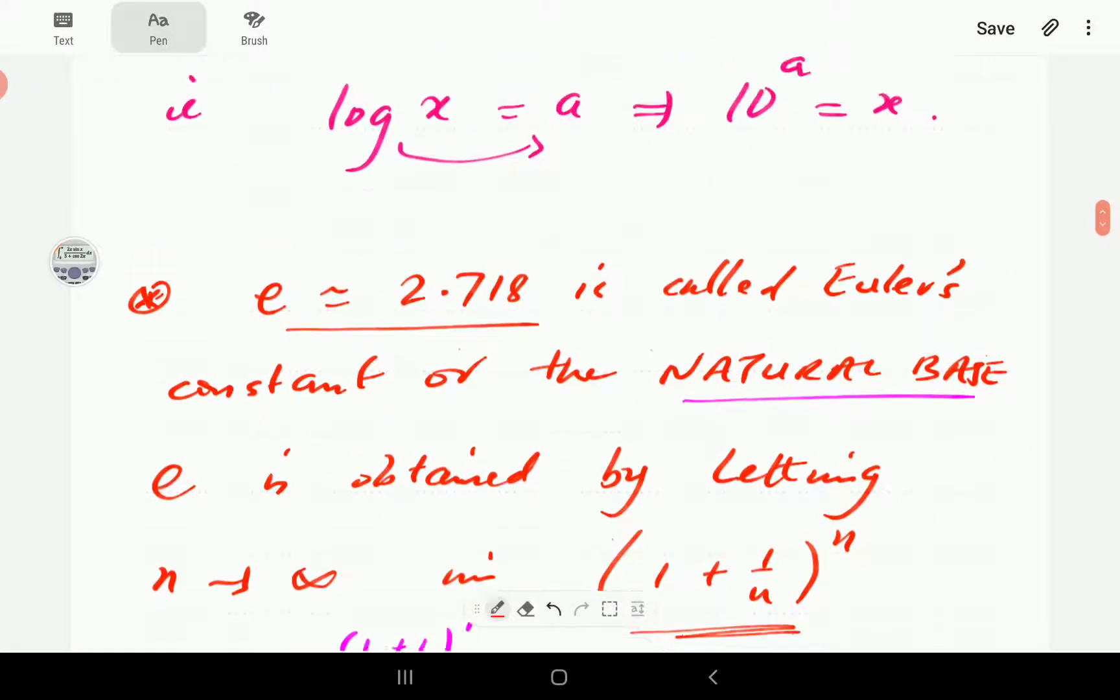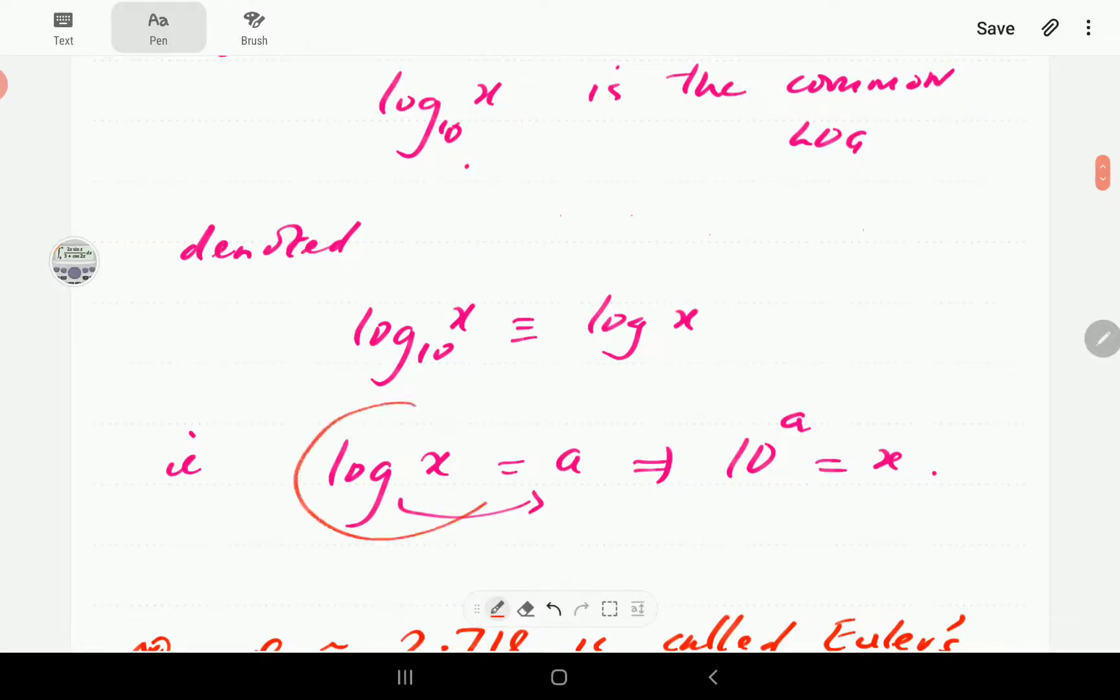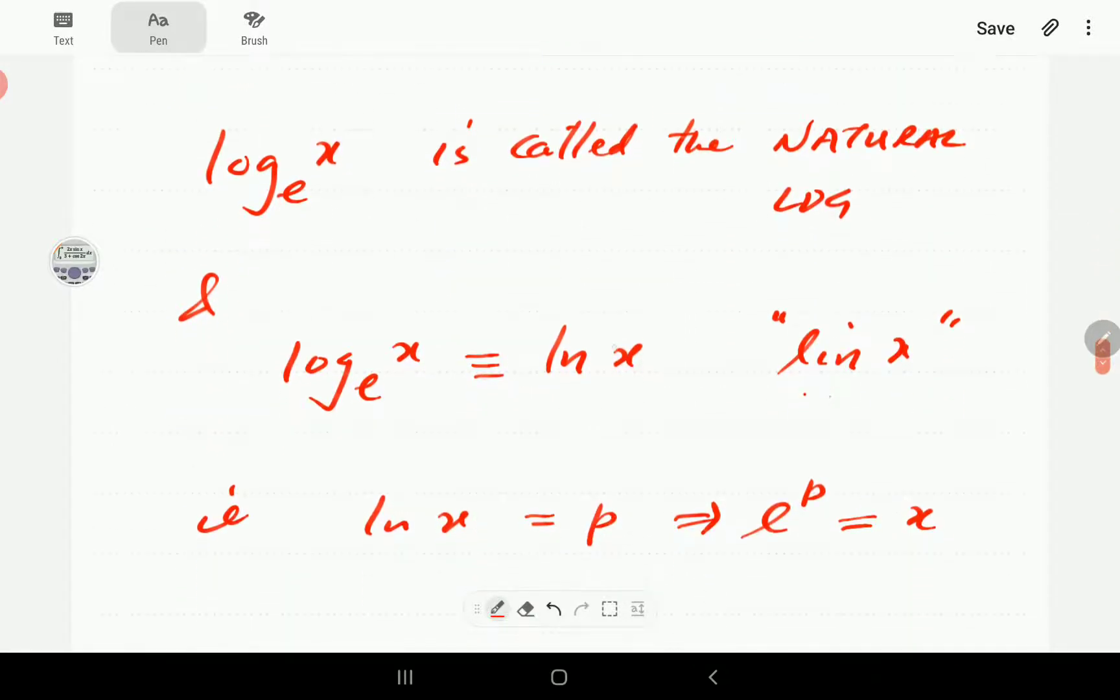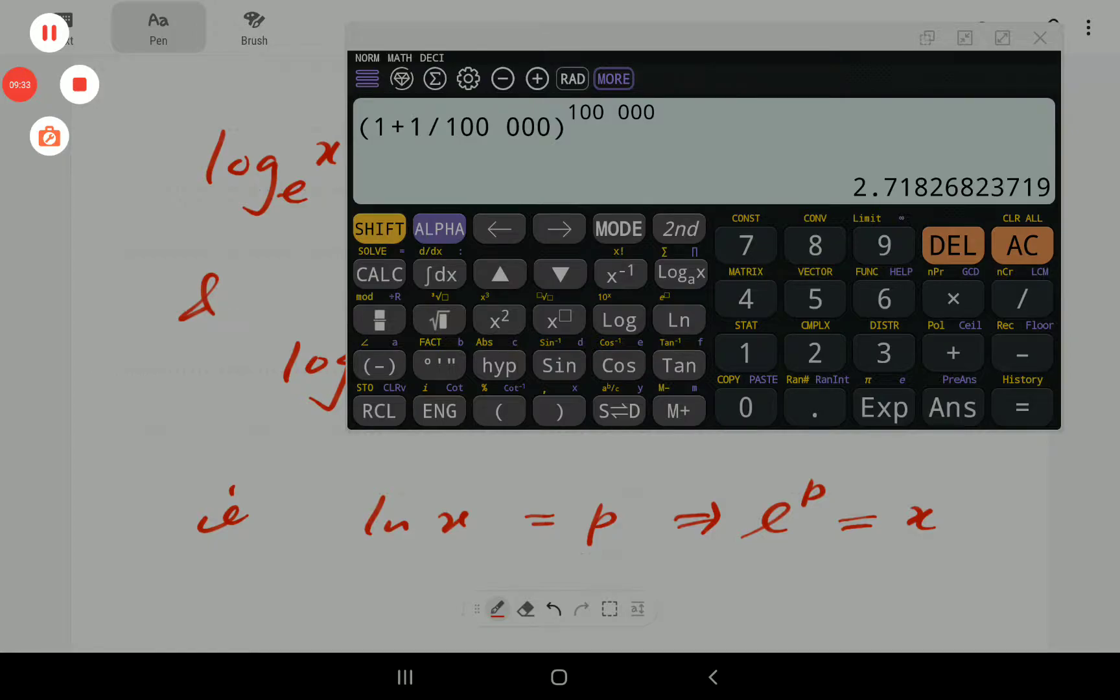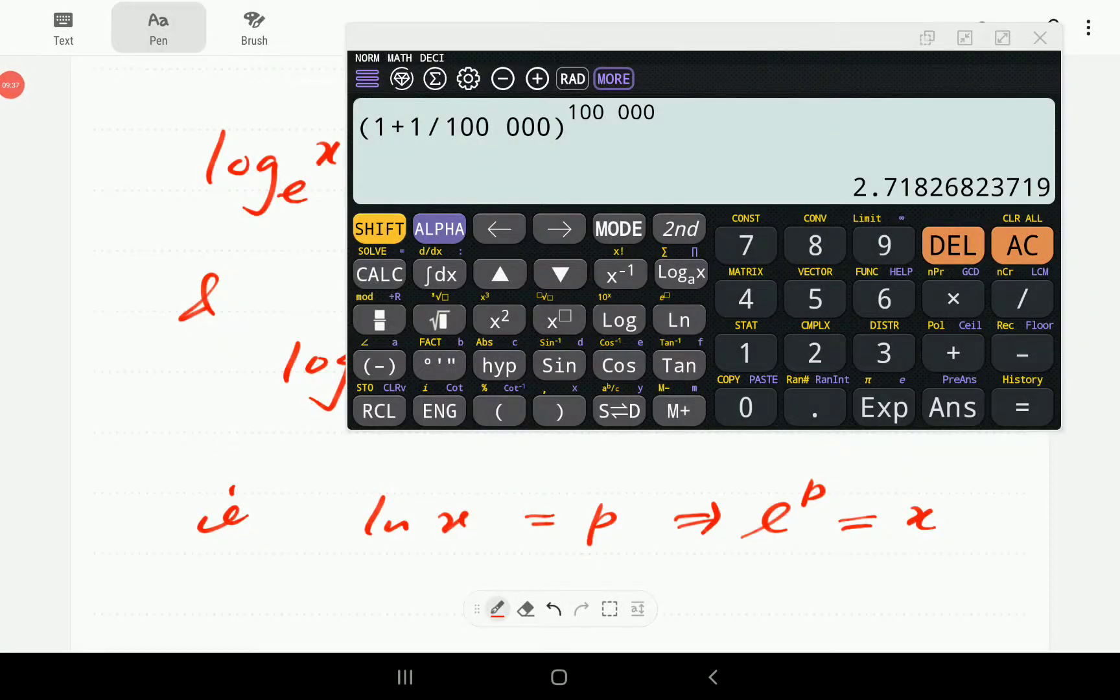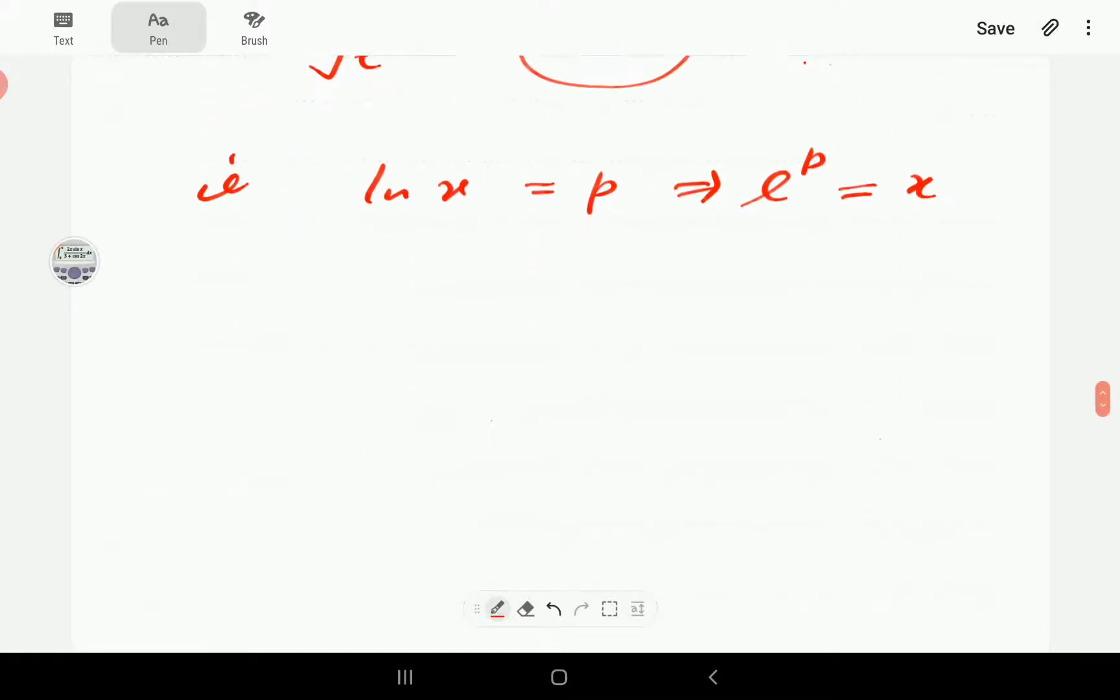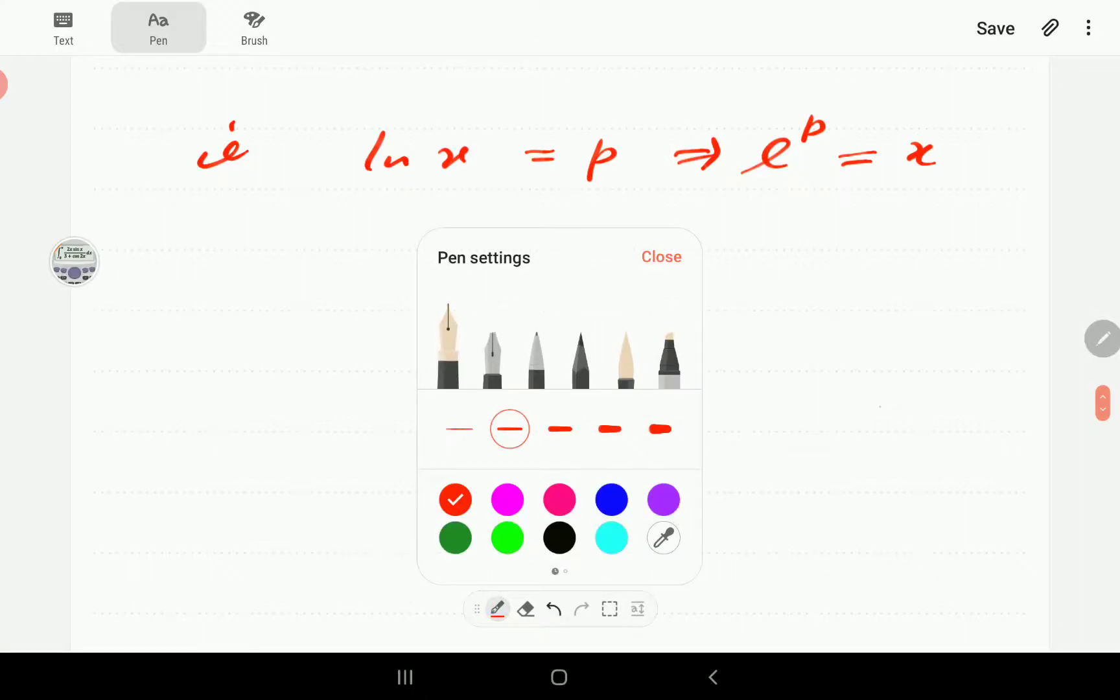The common log and the natural log will typically be found in your scientific calculator. If you look at our calculator here, then we can see that this is the common log key, and this is the natural log key. What we're going to do now is work through a few examples to see how we can work with expressions involving the common log and the natural log in the calculator.